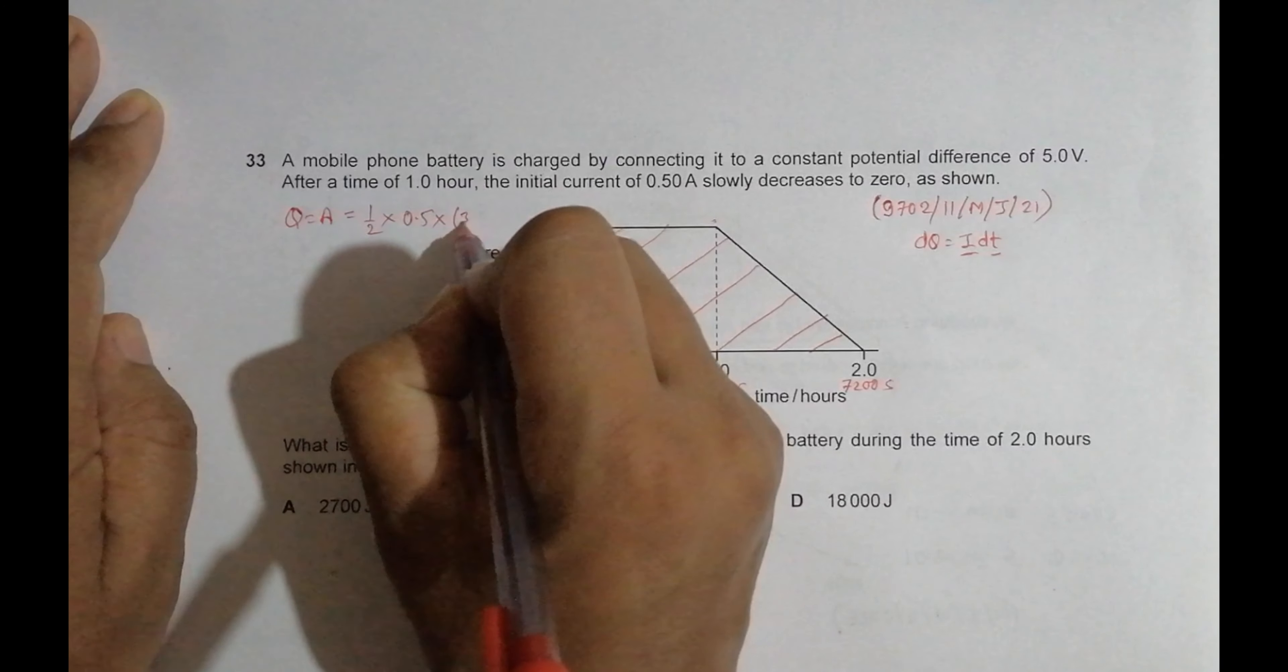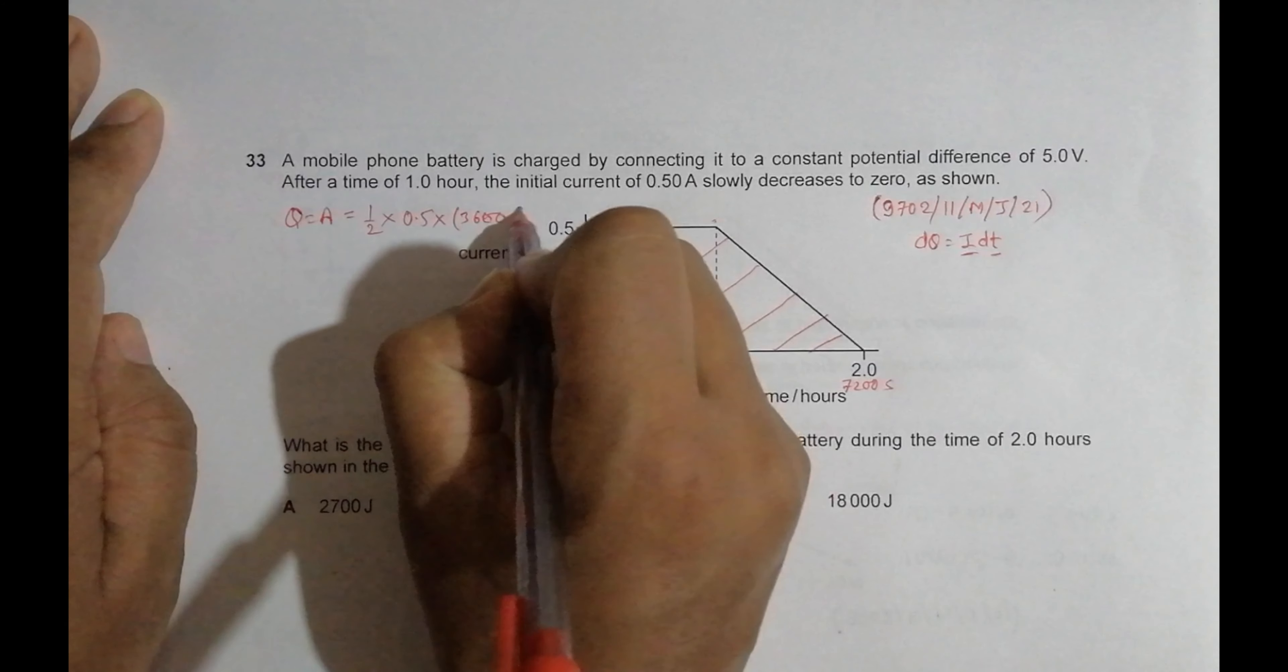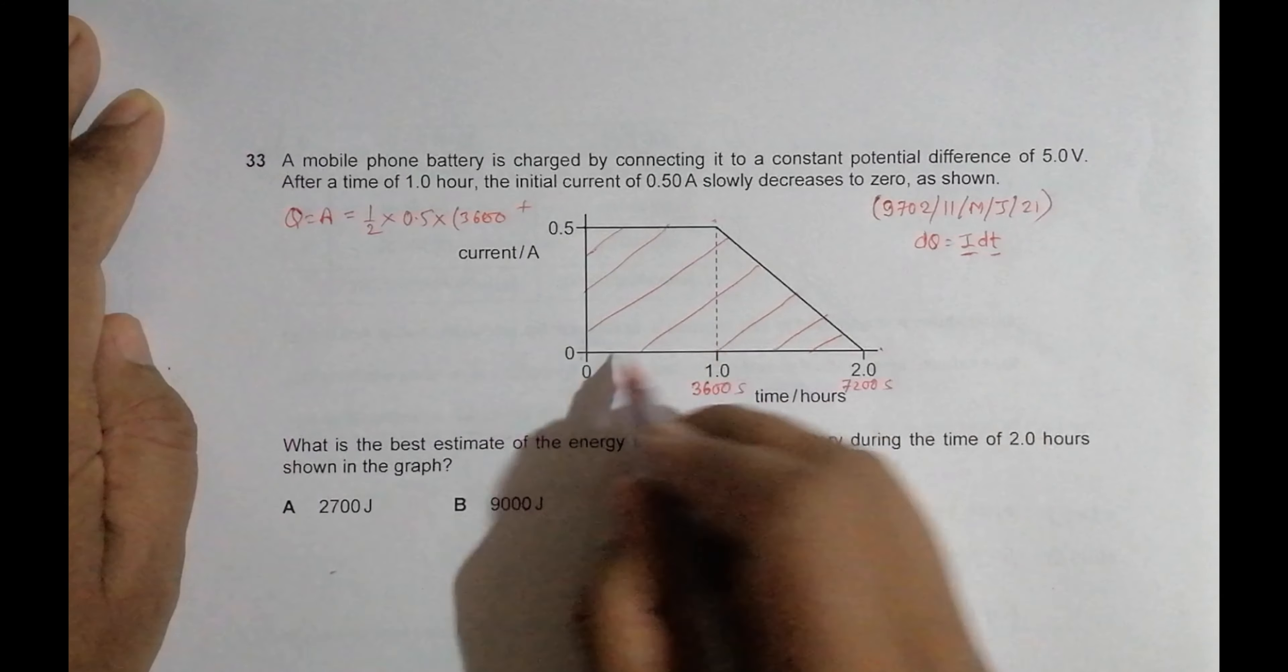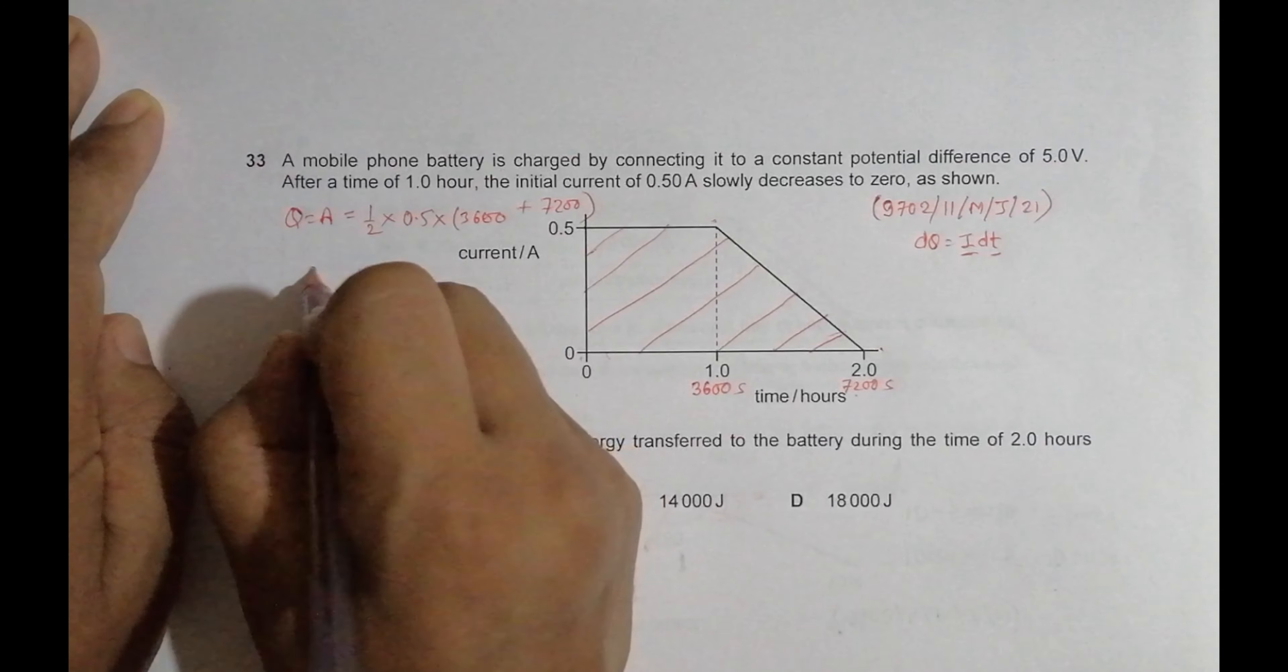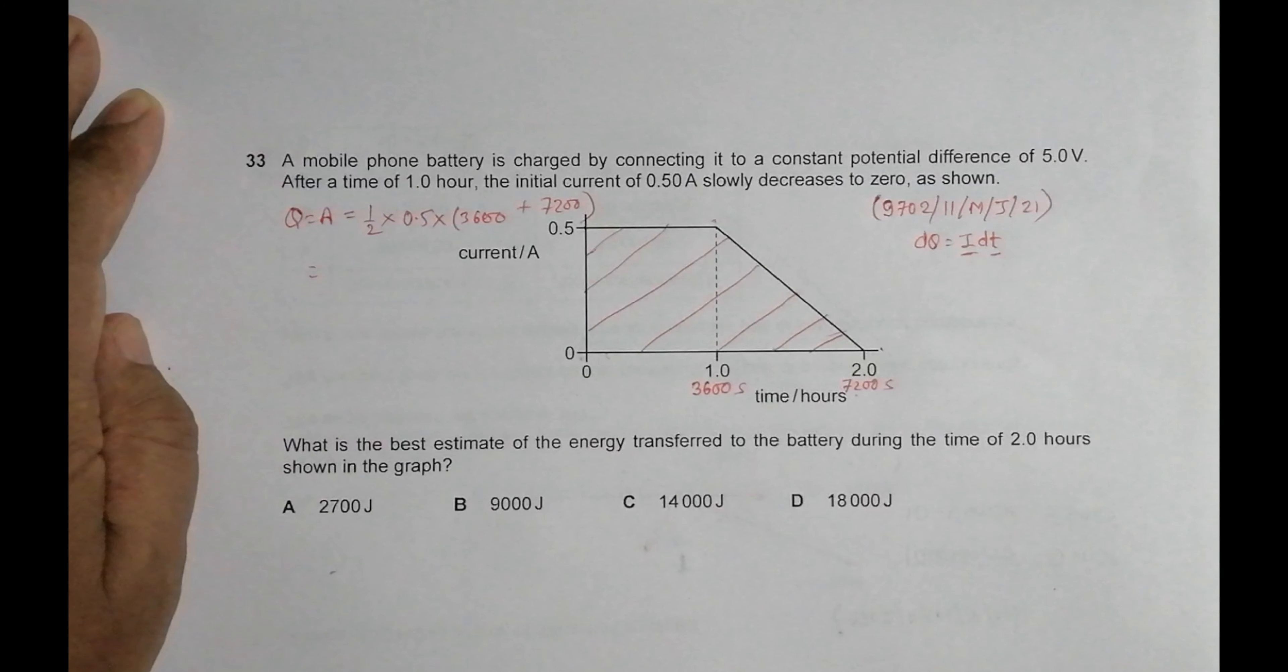This will give us, if I do the calculation: 3600 plus 7200 is 10,800, times 0.5, times 1/2 which is also 0.5. So it's equal to 2700.